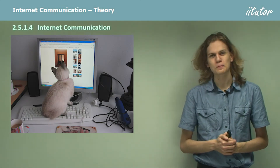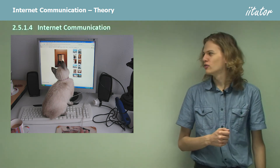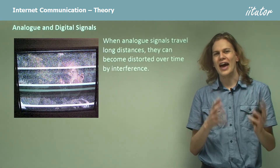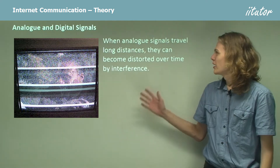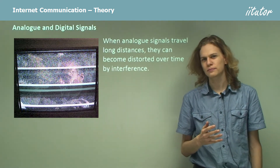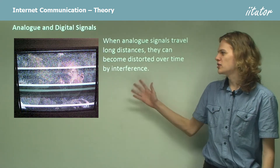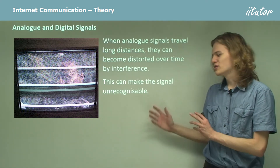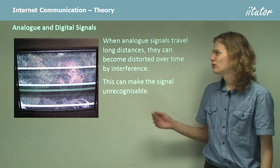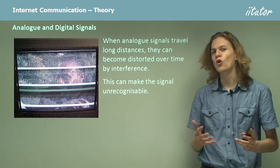We're going to be talking about the internet, a tool for communication and for the sending of pictures of cats. We know from our studies on analog and digital signals that analog signals can lose fidelity when they're transmitted long distances. They can become distorted by interference, leading to pictures like this on a TV. This can make the signal unrecognizable, and in the worst case it can reduce the signal to static, which is just random data without any form.